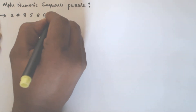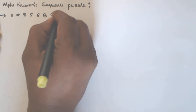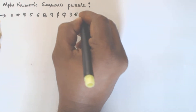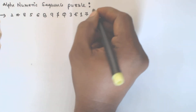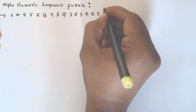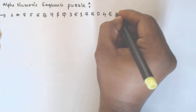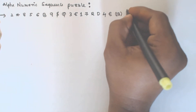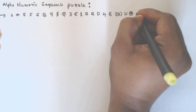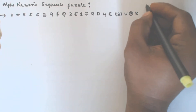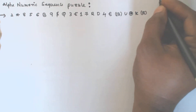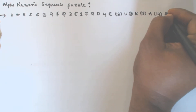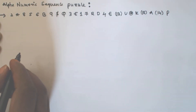6, B, 9, dollar, Q, 3, E, 1, 7, R, D, 4, Euro, 13 — we have to consider this as a single letter — 13, U, at the rate of, K, and 18, and then A, and then 14, and then P. These are the alphanumeric sequences given.